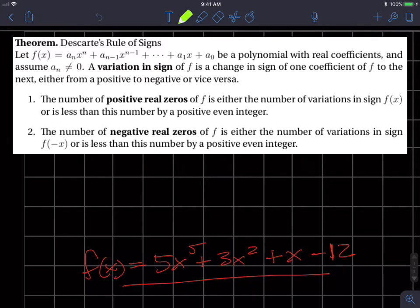Again, that's so that we don't get into this conversation if a sub n is zero, then the first term and what's the lead coefficient. It's just locking that idea in. The next sentence is they're going to define what they mean by or what Descartes meant by a variation in sign. A variation in sign of f is a change in sign of one coefficient of f to the next, either from positive to negative or vice versa.